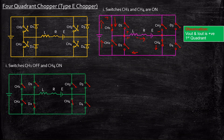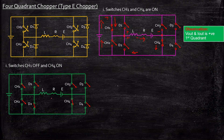Now let us consider when CH1 is turned off while CH4 remains on. When analyzing this chopper, always start from the load — from the inductor. The inductor does not allow a sudden change in current, so it reverses its polarity from plus-minus to minus-plus, acting as an energy source. The current continues to flow in the same direction, and since minus is connected to the cathode of D2, D2 is forward biased and acts as a short circuit, causing current to circulate through that path.